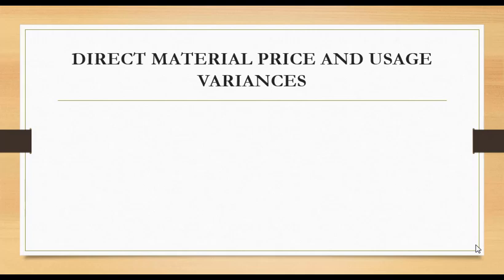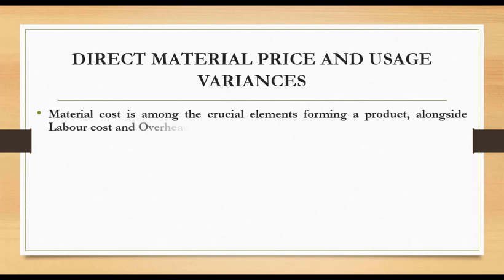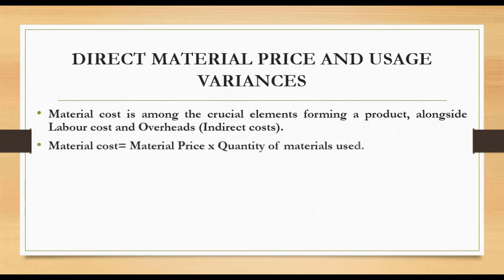Hello, welcome. Today we're going to take a look at direct material price and usage variances. These are two simple variances on materials. Materials form one part of a product along with other elements like labor cost and overheads. Variances for those will be analyzed later.